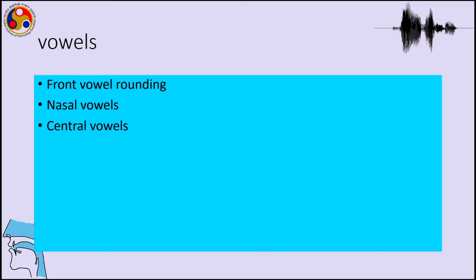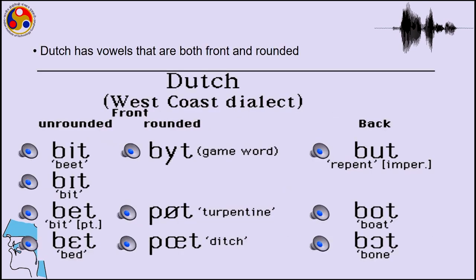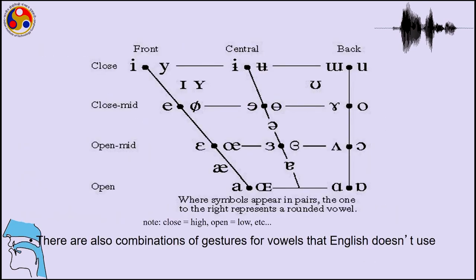Some properties not commonly seen are front vowel rounding, nasal vowels, and central vowels. We have the front, central, and back vowel diagram with the cardinal vowels. The most important properties when talking about vowels are their height, frontness, backness, and roundedness — and why the vowels are spaced as they are in the cardinal vowel set.